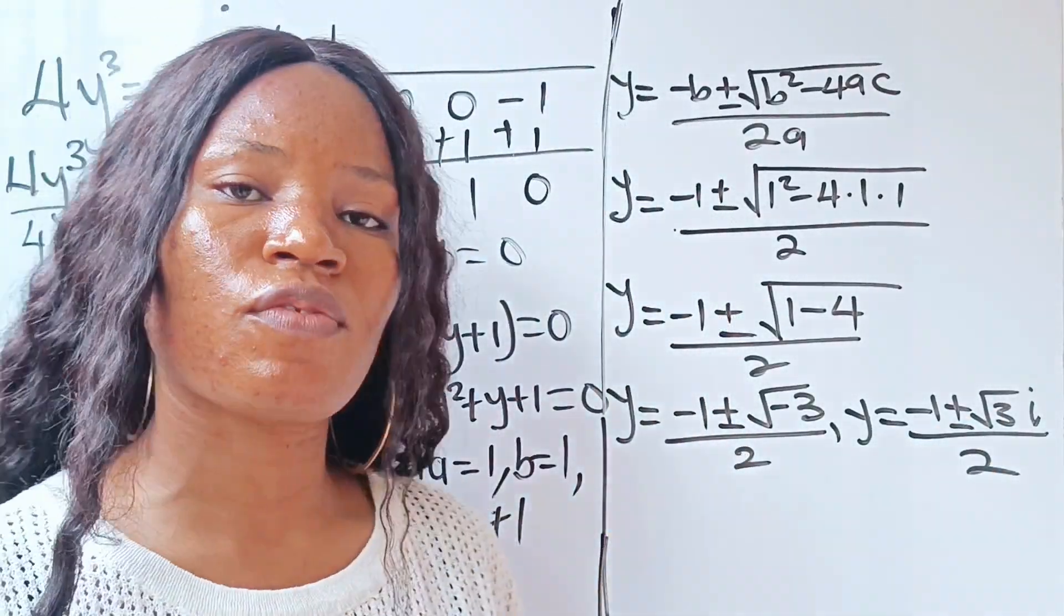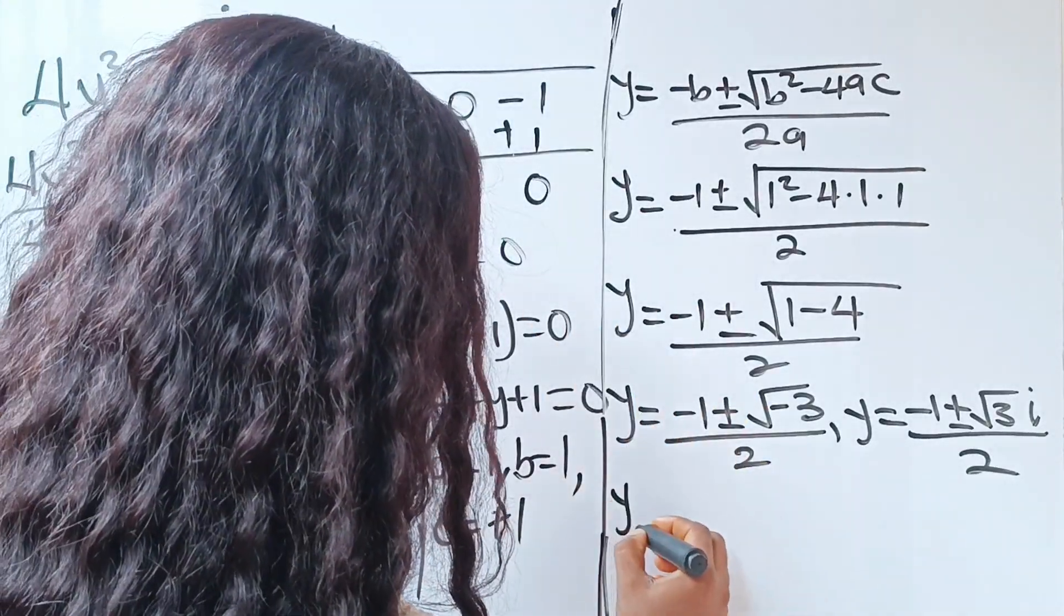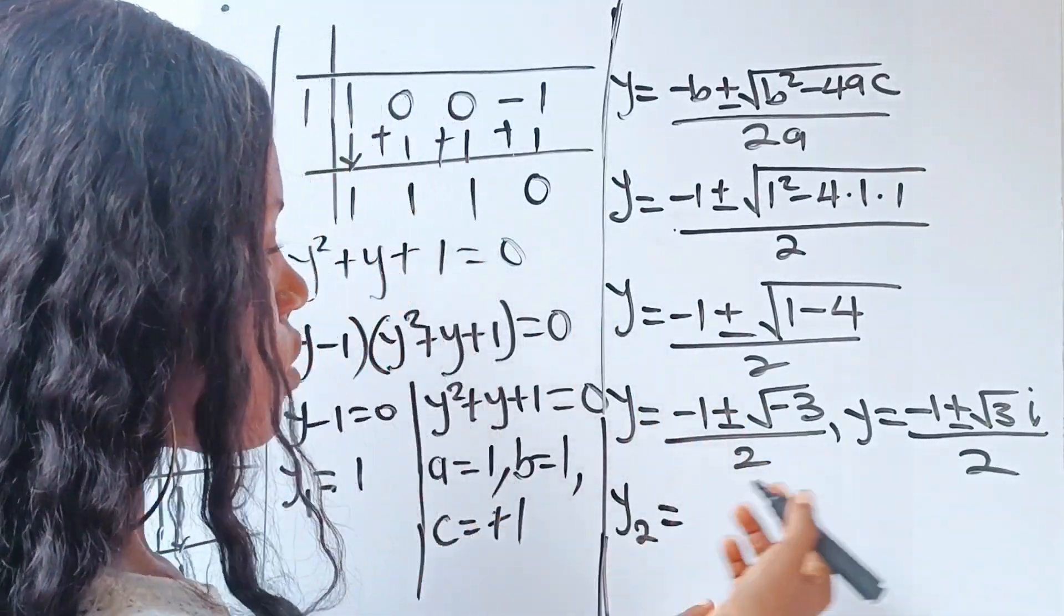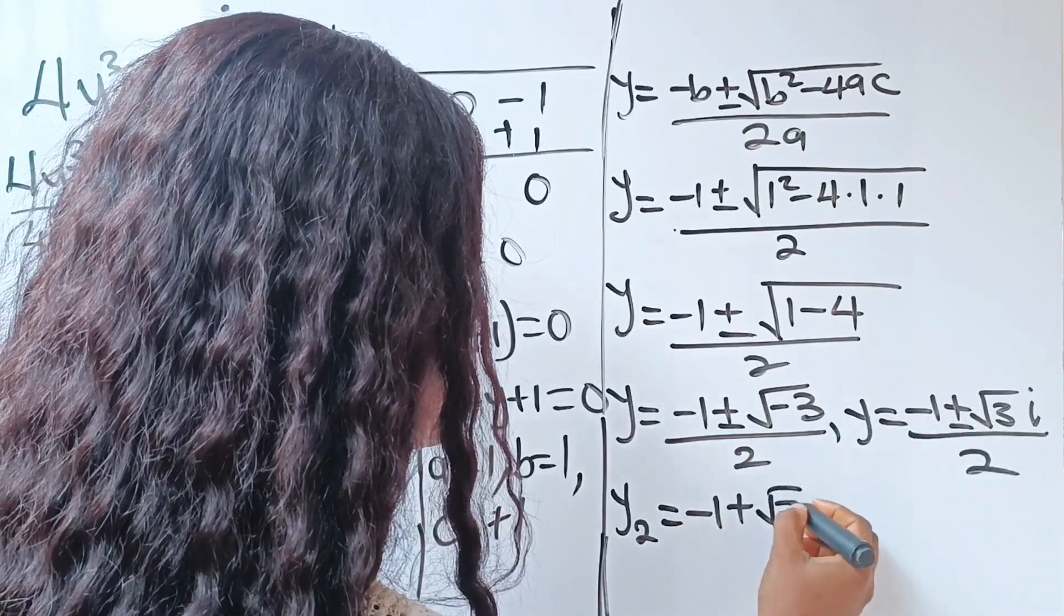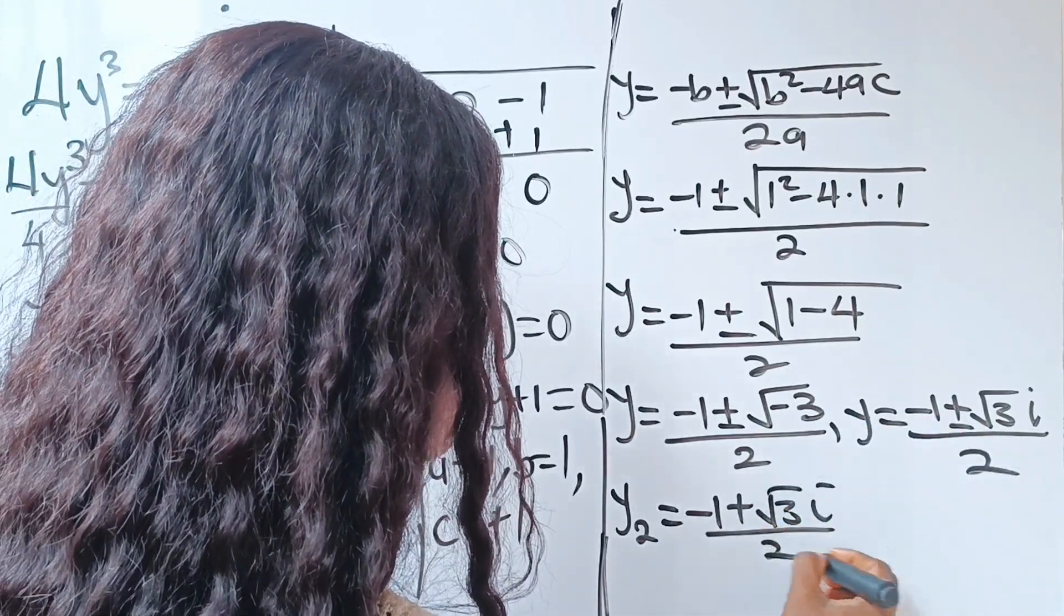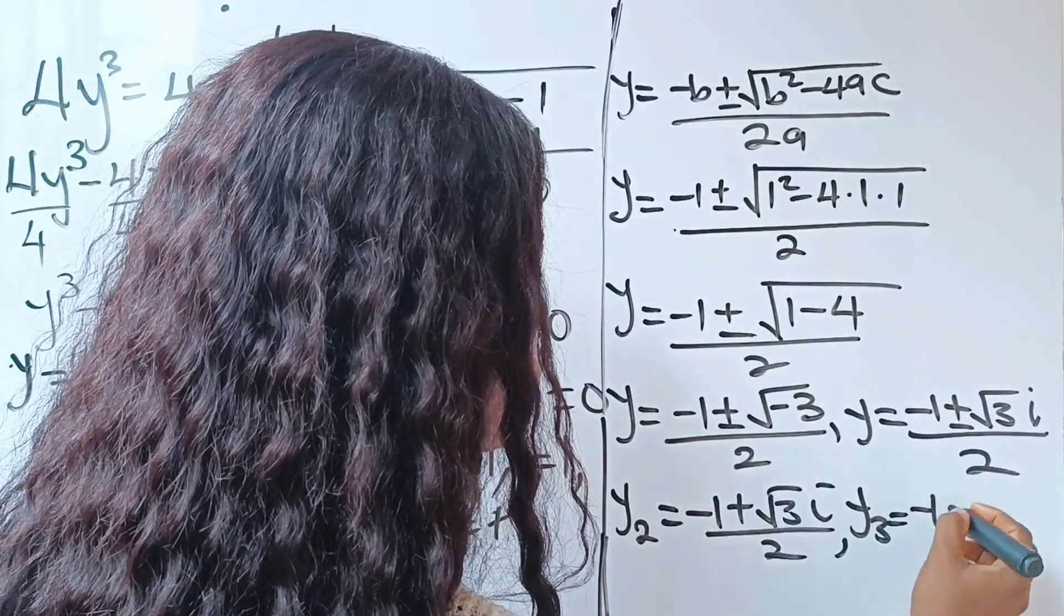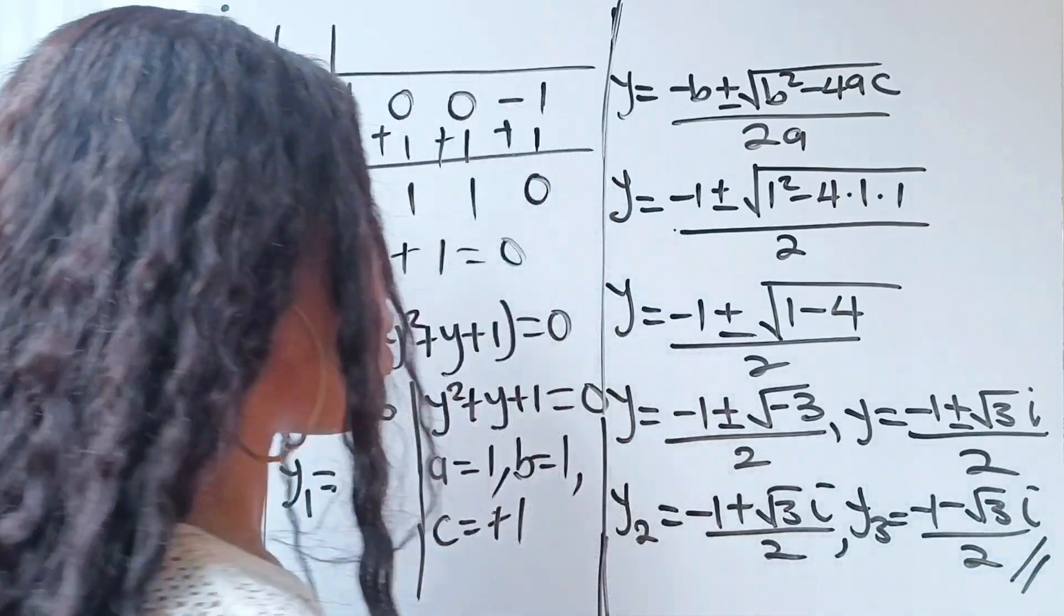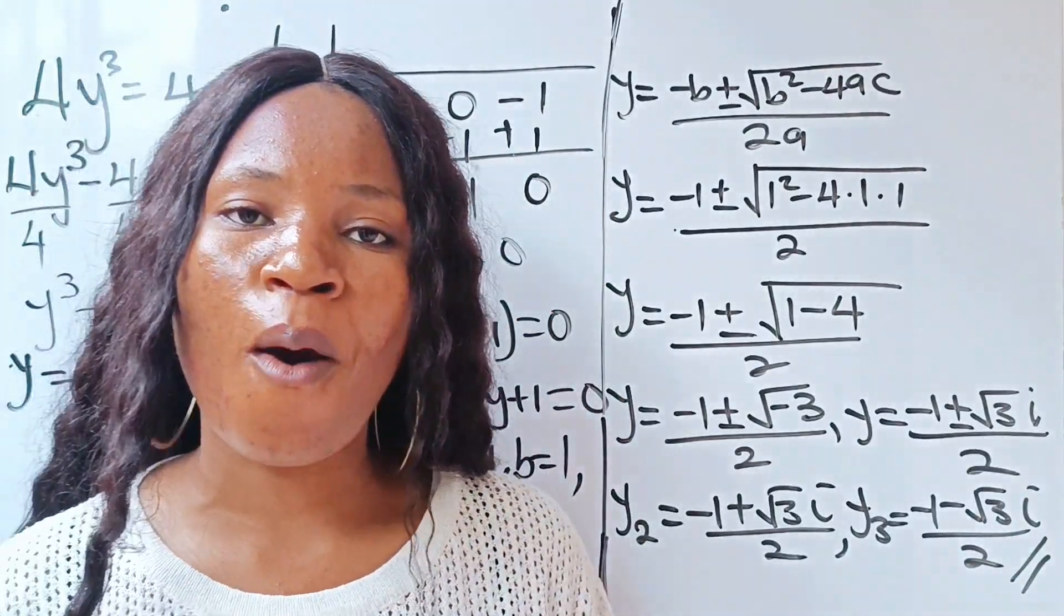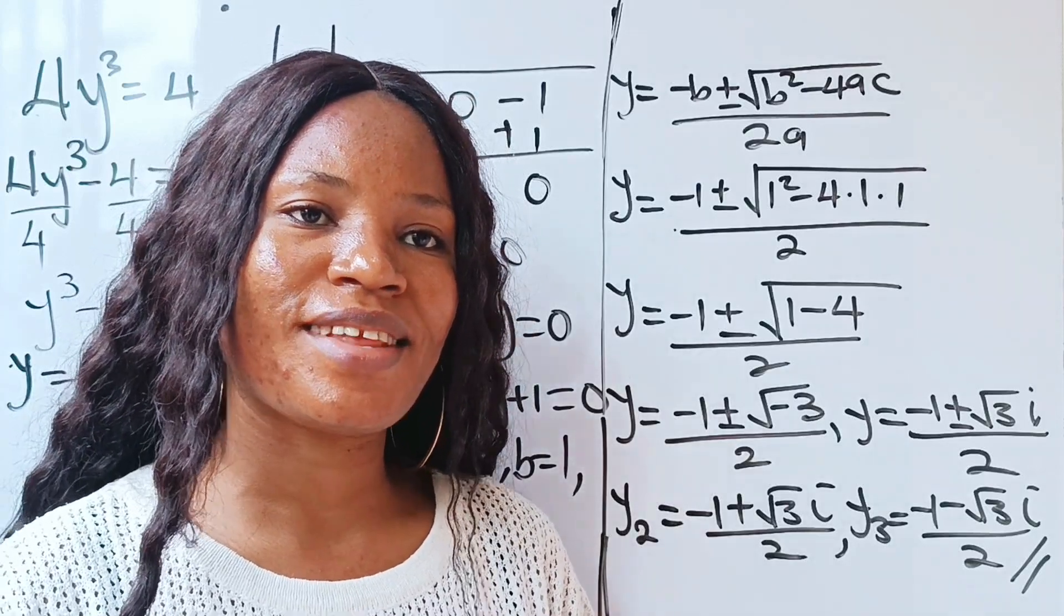Now we have gotten the first value of y, which is 1, right? So we are looking for y₂ and y₃. So from here, we can say that y₂ = (-1 + √3i)/2 and y₃ = (-1 - √3i)/2. So these are the three values of our y. Thank you so much for watching and have a lovely day.